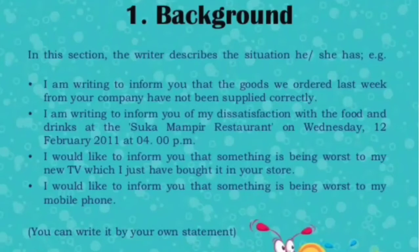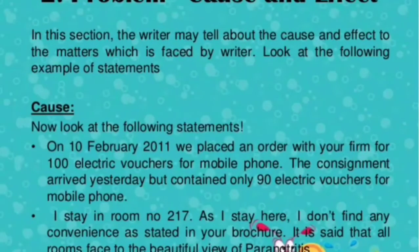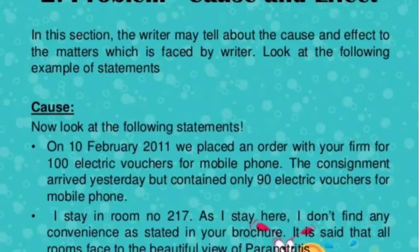In the background, you can even write: 'I would like to inform you that something is going wrong with my new TV, which I just bought from your store.' Now, about the Problem and Cause and Effect. In this section, the writer tells about the cause and effect of the matter faced. For example: 'On 10 Feb 2011, we placed an order with your firm for 100 electric vouchers for mobile phones. The consignment arrived yesterday but contained only 90 electric vouchers for mobile phones.' This is how you describe the problem.